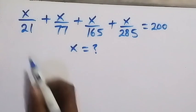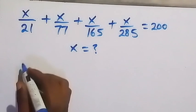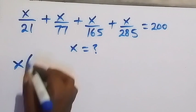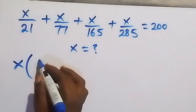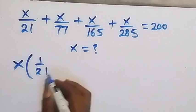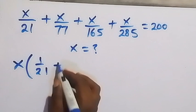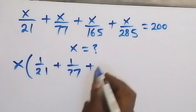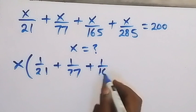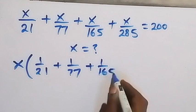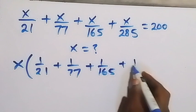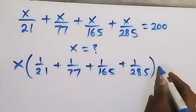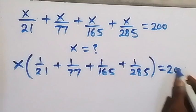From here, we have x common. So let's take it out and we have x into bracket: 1 over 21 plus 1 over 77, then plus 1 over 165 plus 1 over 285, then close bracket equals to 200.